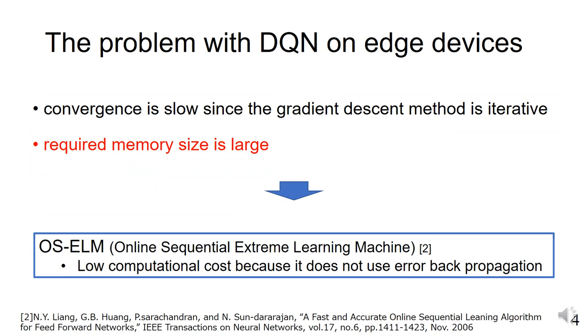There are two main problems if we execute DQN on small edge devices. The first problem is that the gradient descent method is iterative, so convergence is slow. The second problem is that it requires a large amount of memory to store the experience.